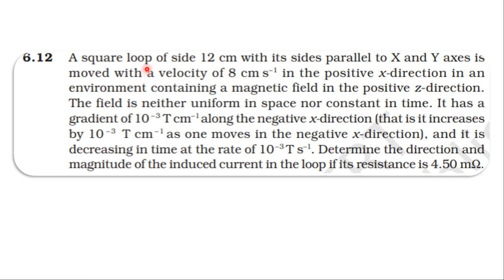From the test book, topic electromagnetic induction, question on a square loop of side 12 cm with its sides parallel to the x and y axes, moved with a velocity of 8 cm per second in the positive x direction, in an environment containing a magnetic field in the positive z direction. The field is neither uniform in space nor constant in time. It has a gradient of 10 power minus 3 tesla per centimeter along the negative x direction.